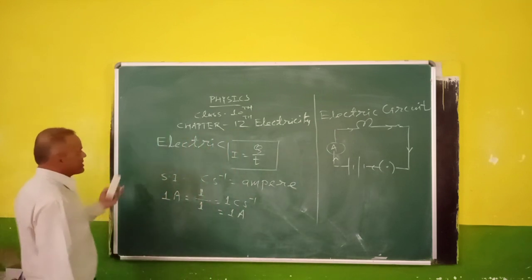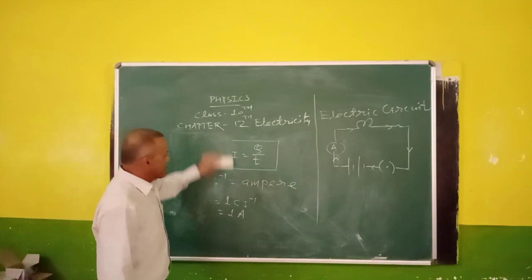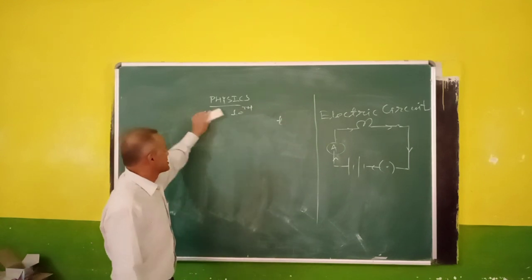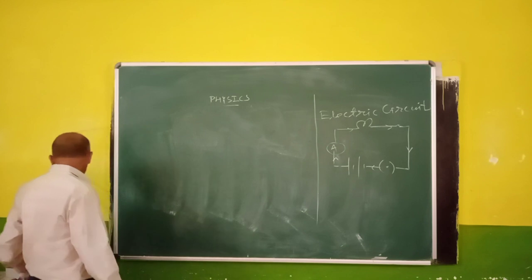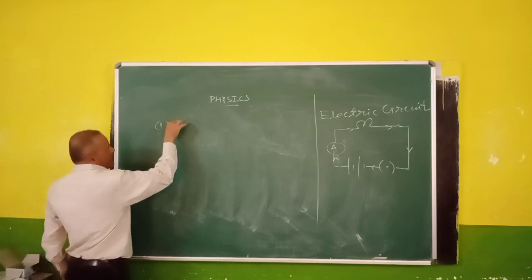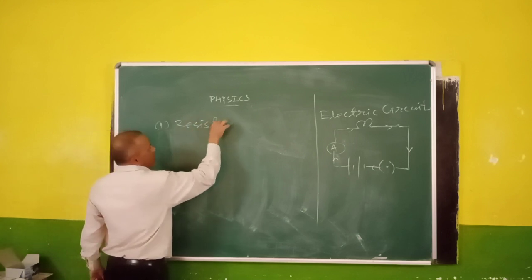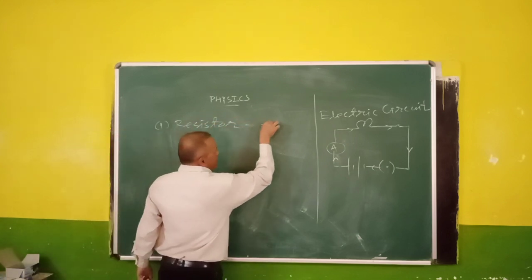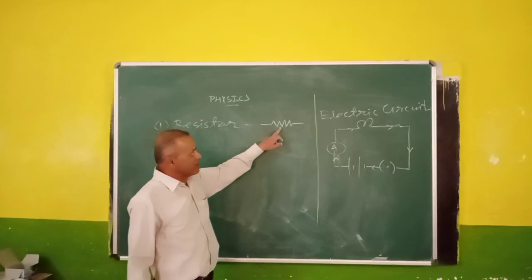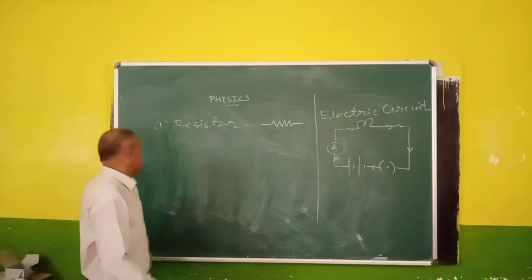The next topic in this chapter is symbols. Symbols are electrical components used in an electrical circuit. The first symbol is the resistor. Whenever you see this symbol in an electric circuit, it represents a resistor.